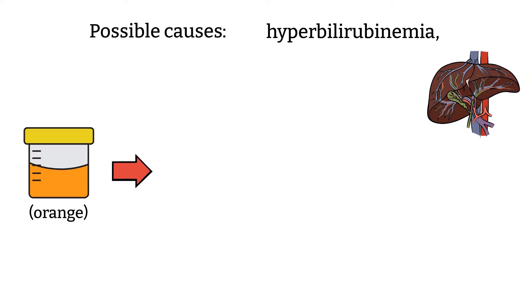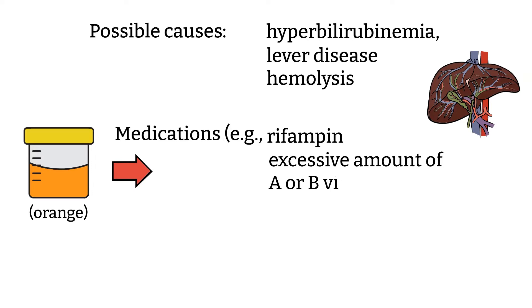Orange urine is often found in patients with liver disease and hemolysis. Some medications can also give urine orange color as well. Your food consumption can make urine orange if you consume an excess amount of vitamin A or vitamin B complex, or a lot of orange color food like carrots.